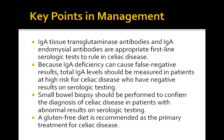In terms of key points in management, IgA tissue transglutaminase antibodies and IgA endomysial antibodies are appropriate first-line tests. Because IgA deficiency can cause false negative results, total IgA levels should be measured in patients at high risk for celiac disease. Small bowel biopsies should be performed to confirm the diagnosis, and a gluten-free diet is generally recommended.